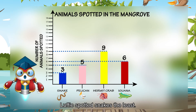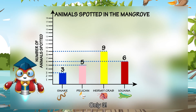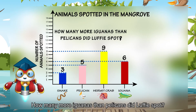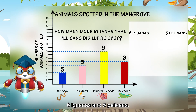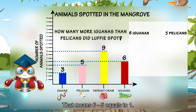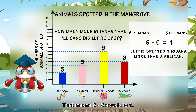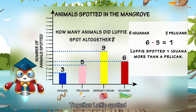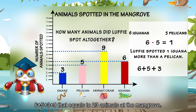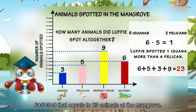Luffy spotted snakes the least — only three. How many more iguanas than pelicans did Luffy spot? Six iguanas and five pelicans. That means six minus five equals one. Luffy spotted one iguana more than a pelican. Together, Luffy spotted six plus five plus three plus nine, which equals 23 animals at the mangrove.